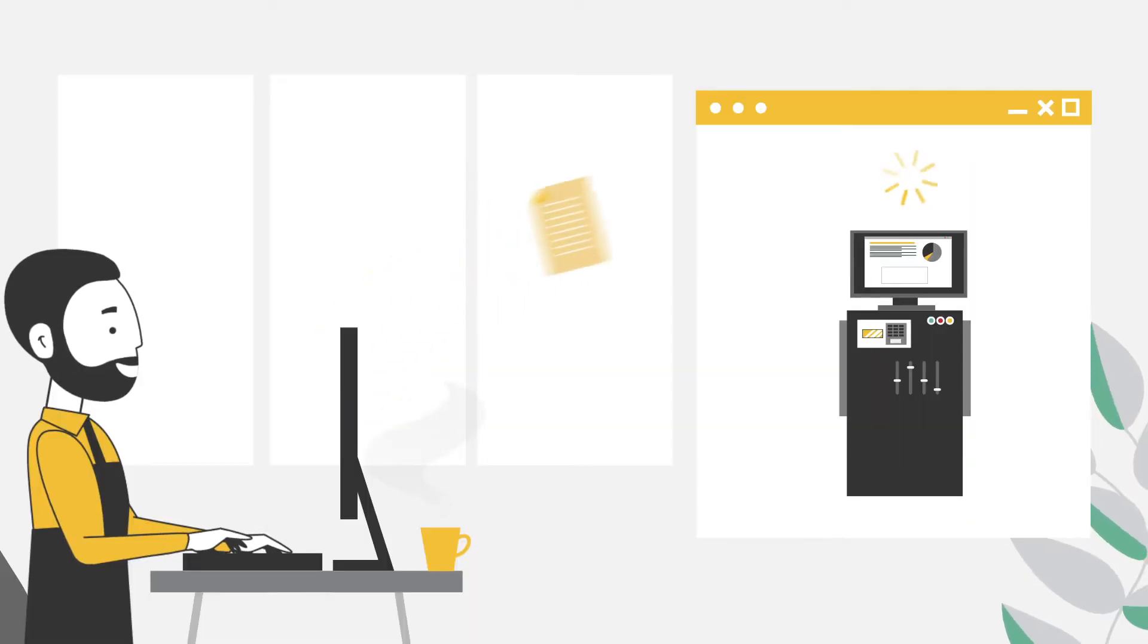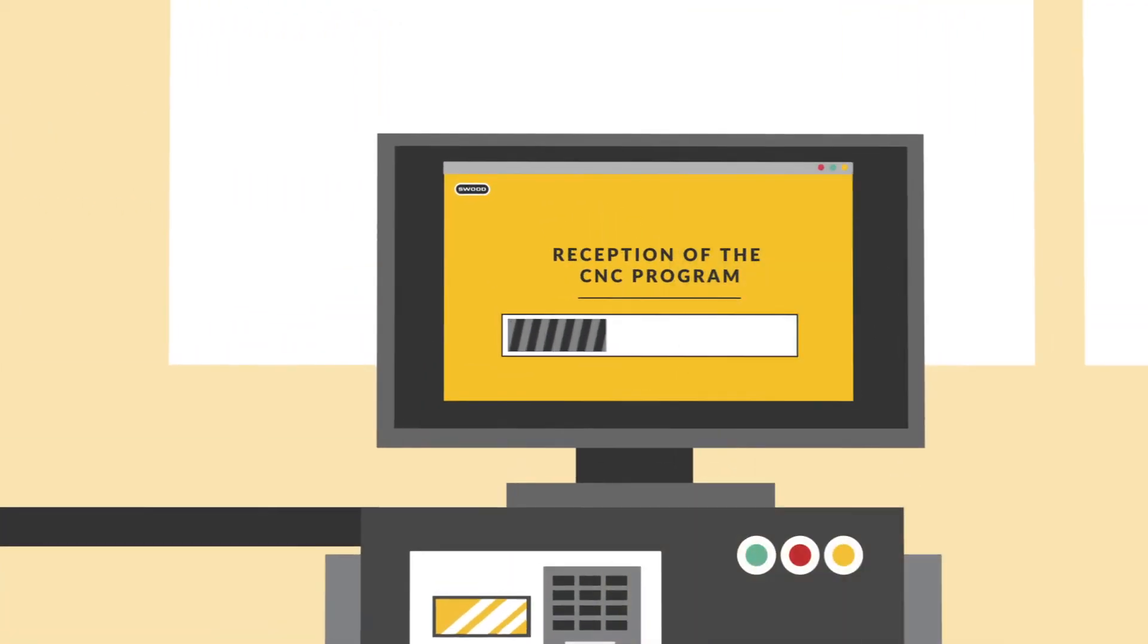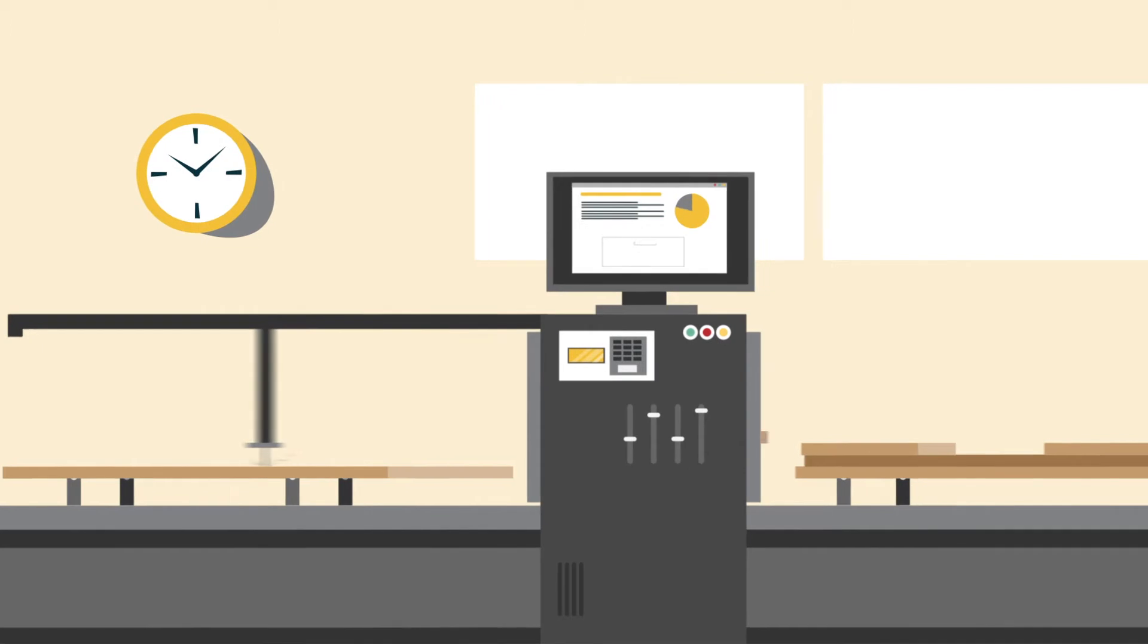Will can now move on to the manufacturing process. Thanks to a powerful geometric analysis, Will can output CNC codes with SWOOD and send it to his machine. In his workshop, Will only needs to open the program on his CNC machine.